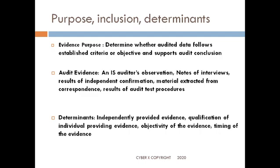What are the determinants of audit evidence? Determinants are independently provided evidences — they need to be independent and cannot come under some influence. The person providing the evidence needs to be qualified to do so; someone unrelated cannot provide the correct set of evidences. The evidence should be objective rather than subjective so that interpretation is correct. Timing of the evidence is also important — it needs to be properly timed as and when required.